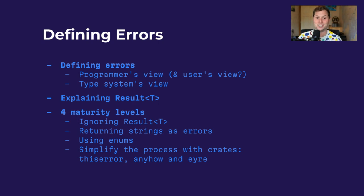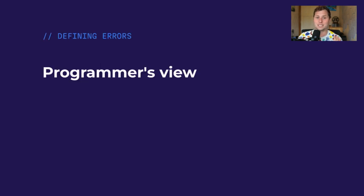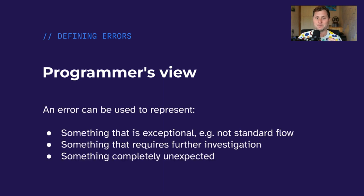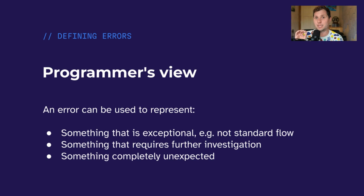Now back to the agenda. We want to look at two views of what an error is. From the programmer's view, an error is something that doesn't normally happen — we might call it an edge case or exception, something not planned for that might happen but probably won't. We can also think of an error as a marker for debugging, indicating a problem has occurred so you can provide useful output for anyone investigating later.